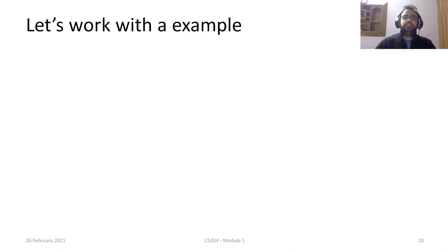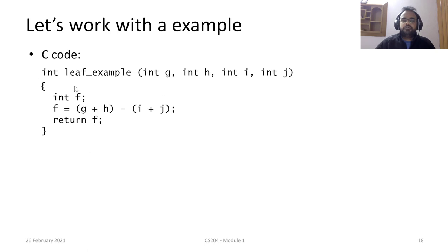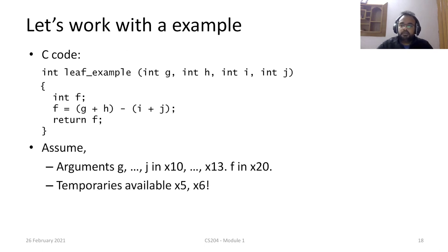Let's see how we can use the stack with an example. The C code we want to convert into assembly is a function called leaf_example with four parameters g, h, i, j. Its body calculates a local variable f as g plus h minus i plus j, and returns f. We assume g, h, i, j are in registers X10, X11, X12, X13, and f will be in X20.